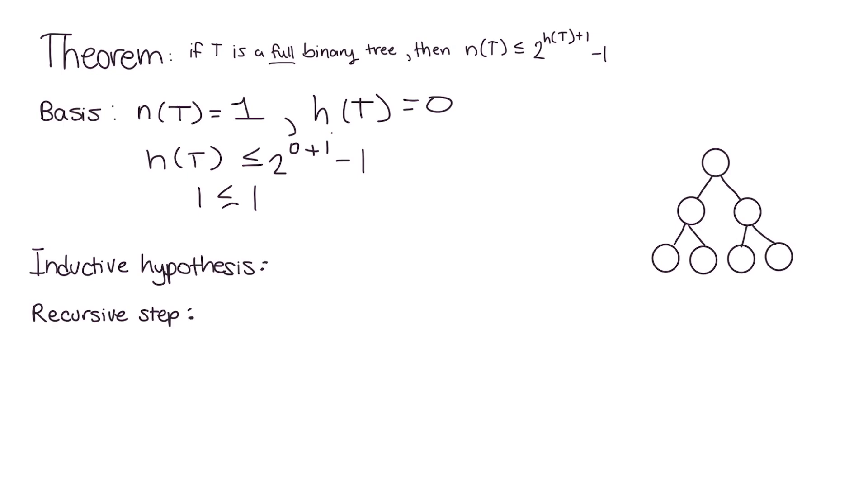So they want us to prove that if it's a full tree, then the number of nodes in the tree will be less than or equal to 2 to the height of the tree plus 1 minus 1. And remember, when you're counting the height of trees, you always start from zero, and then one, two. So this tree has a height of two.